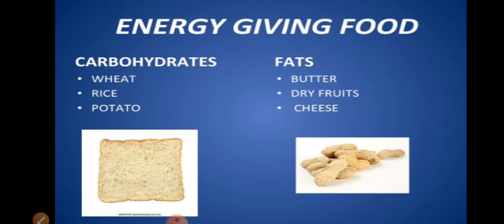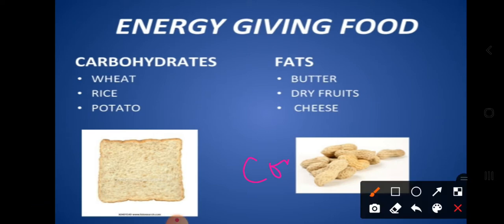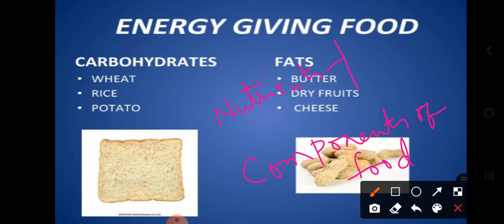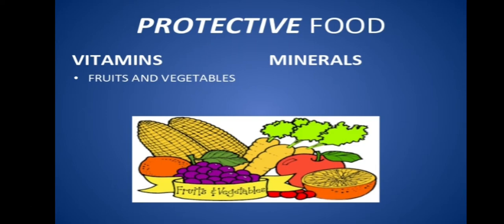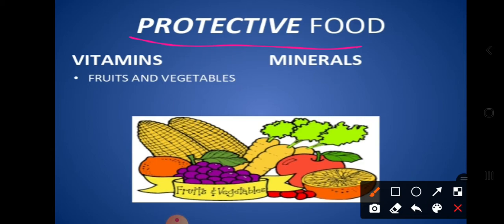Namaste children, welcome back to another session of our chapter on components of food. In our earlier classes we came to know the word nutrient and the different types of nutrients — macronutrients and micronutrients. Macronutrients are energy-giving nutrients like carbohydrates, fats, and proteins, which are helpful in growth and development. Micronutrients are called protective foods — vitamins and minerals — which help us fight diseases.